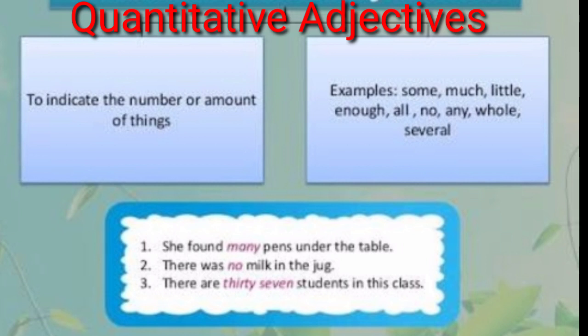To find quantitative adjectives, we ask 'how many' or 'how much.' Example one: 'She found many pens under the table.' How many pens? — Many. Example two: 'There was no milk in the jug.' How much milk? — No. Example three: 'There are 37 students in the class.' How many students? — 37.